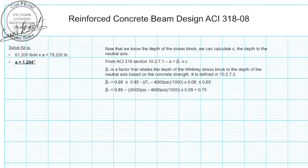So for our situation we've got 6000 PSI concrete and we calculate a beta1 of 0.75.